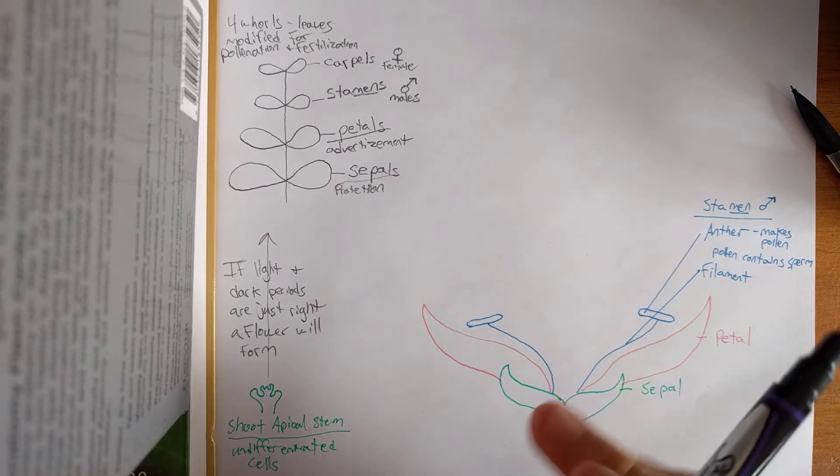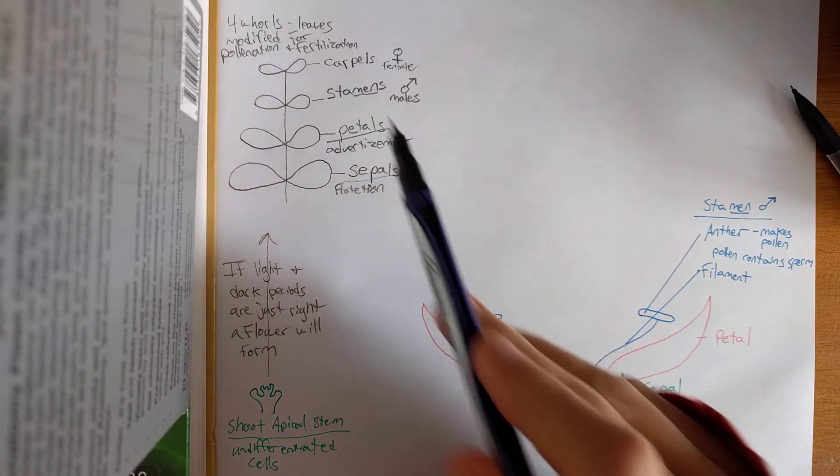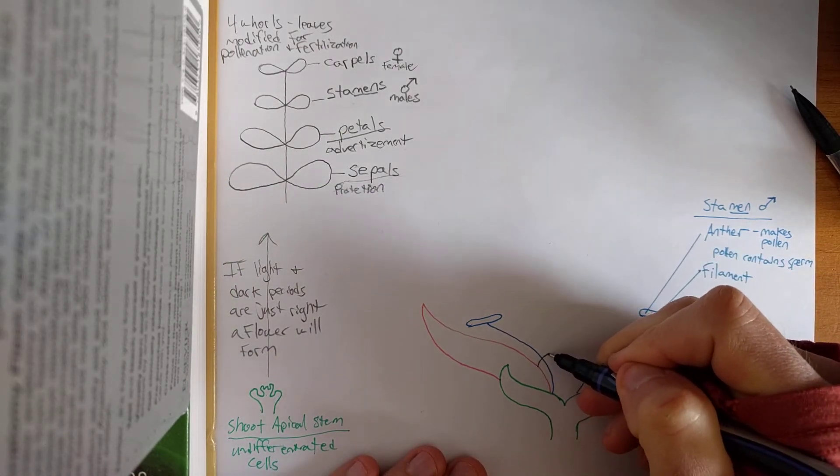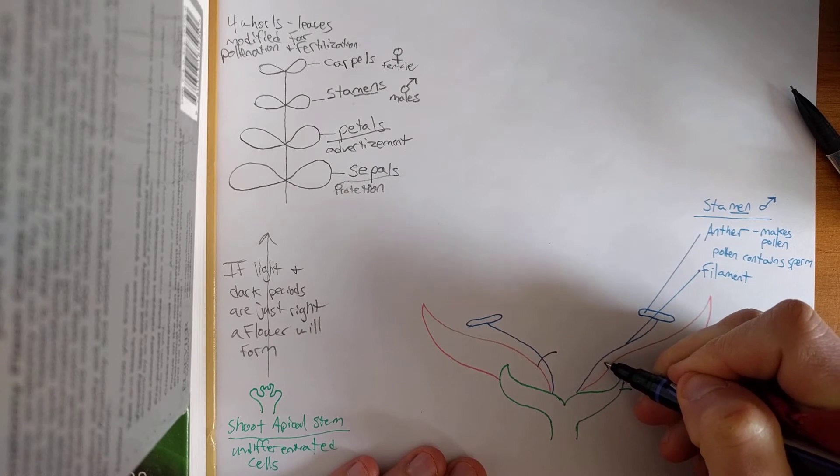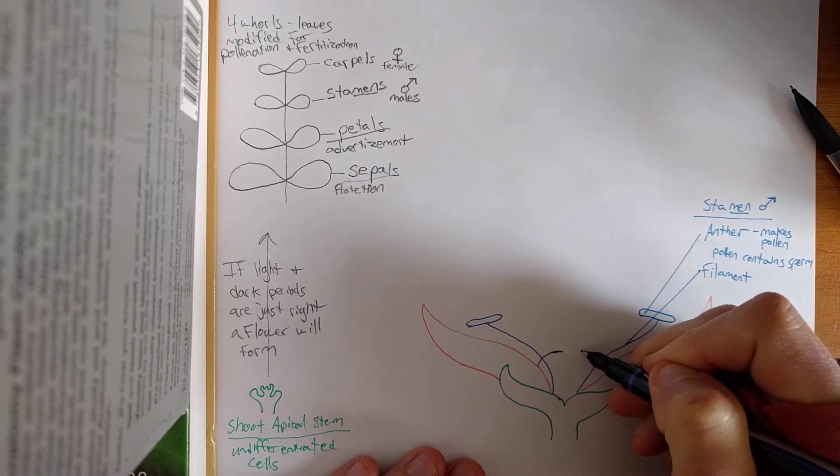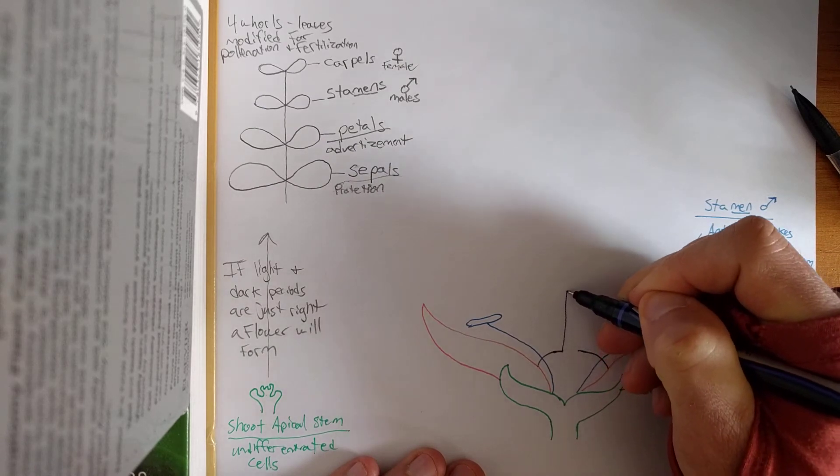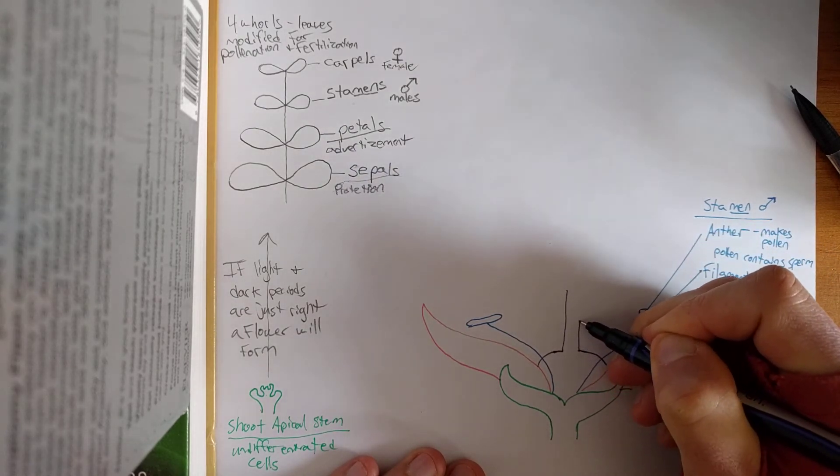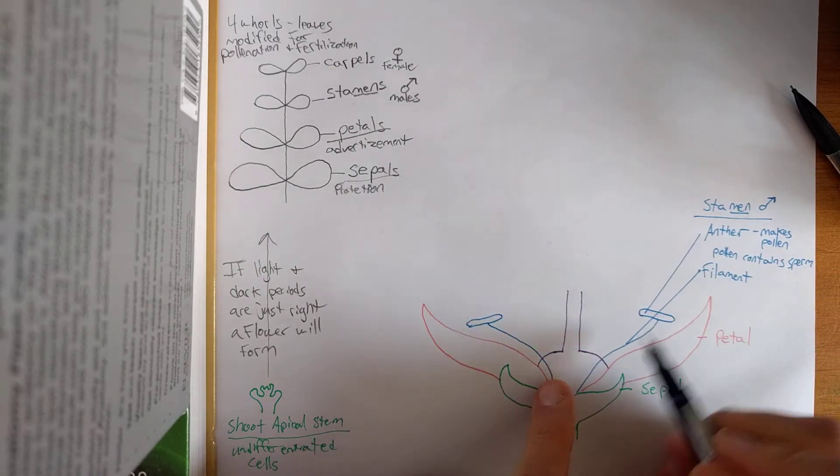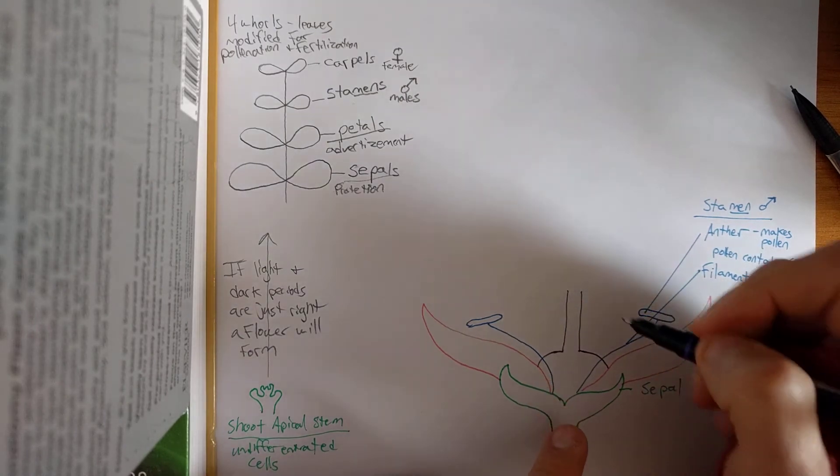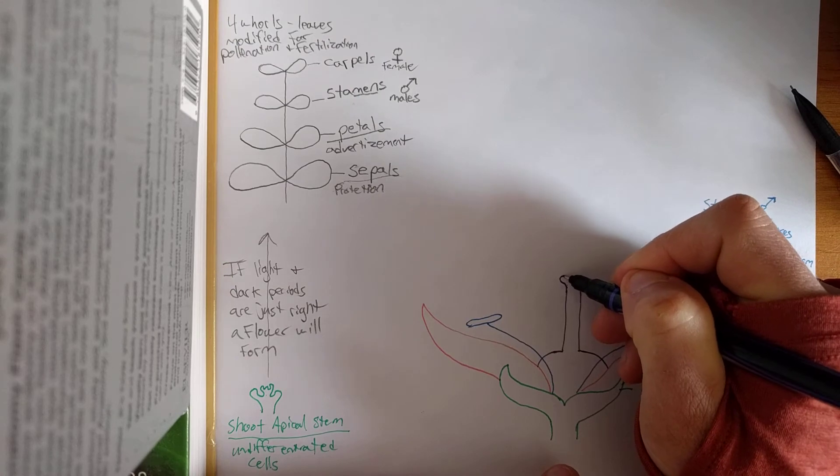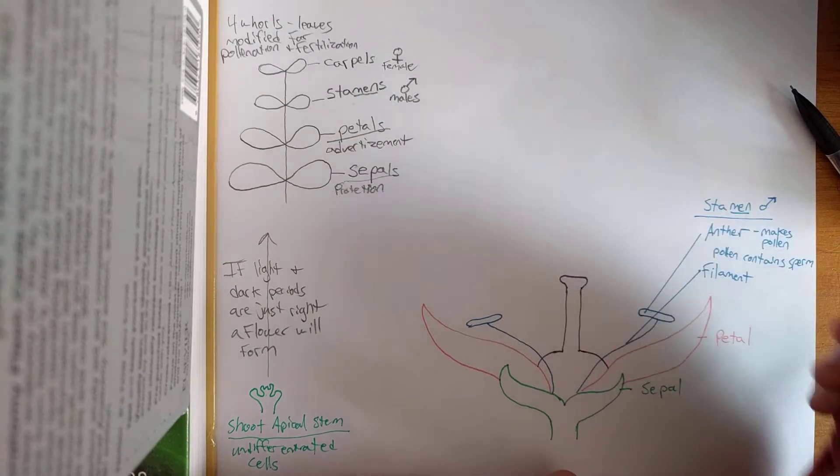Last component, last whorl. I'm gonna get purple going here for carpal. Usually it's got a swollen bottom. Making it a little more drastic than really it probably is. And then it's got an elevating piece. Usually the goal is to elevate above, if it's a complete flower. Elevate above the male stamens. So that the flower does not self-pollinate and self-fertilize. With kind of a landing pad on the top.